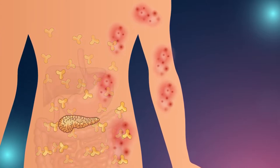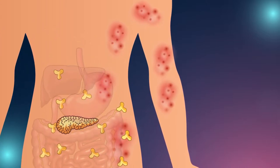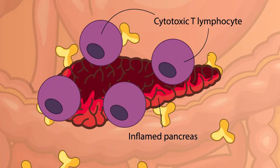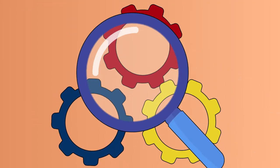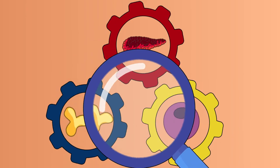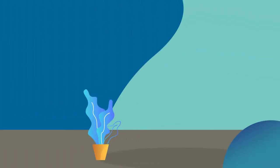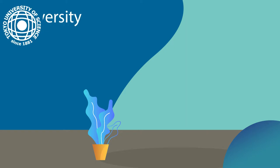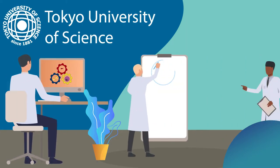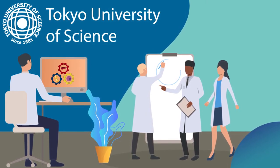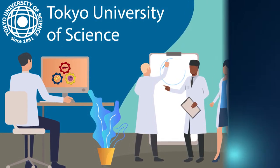Studies have shown that cytotoxic T-lymphocytes, or CTLs, are also found in abundance in the inflamed pancreas of patients. However, the exact mechanism of action of CTLs and IgG4 is unclear. Therefore, researchers from Tokyo University of Science decided to explore the specific roles of CTLs and IgG4 in IgG4RD.